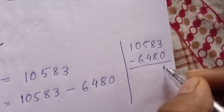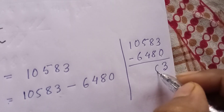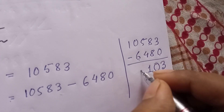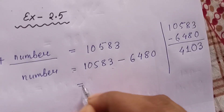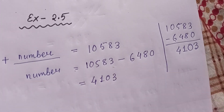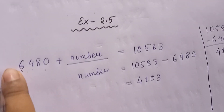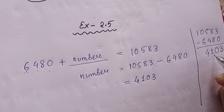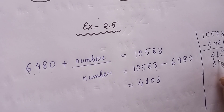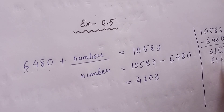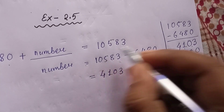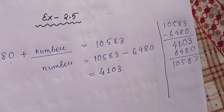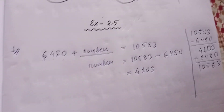Now let us calculate: 3 minus 0 is 3, 8 minus 8 is 0, 5 minus 4 is 1, 10 minus 6 is 4. So the answer is 4,103. We can verify: 4,103 added to 6,480 gives 10,583. Yes, it is correct!